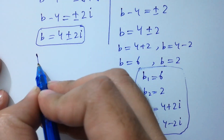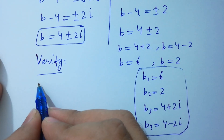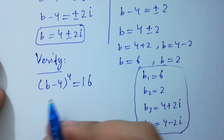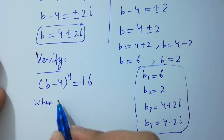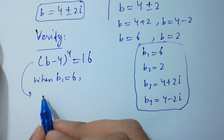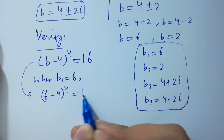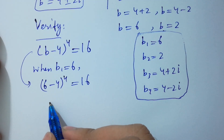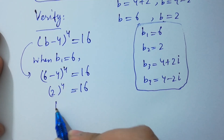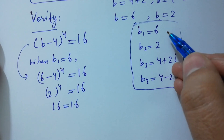Now I am going to verify (b−4)^4 = 16. When b₁ = 6, put the value of b: (6−4)^4 = 2^4 = 16 = 16. This satisfies the equation, so b₁ = 6 is correct.